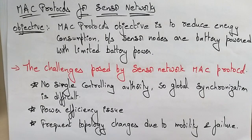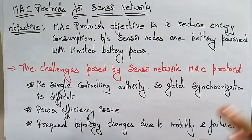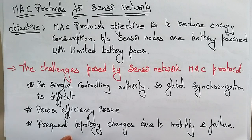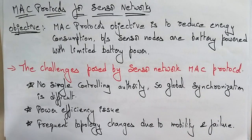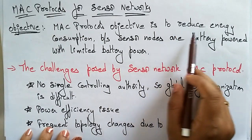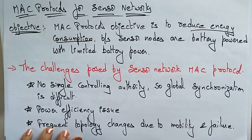Hi students, welcome back. Let's continue with our wireless sensor networks. The next topic is MAC protocols for sensor networks. You have MAC protocols for mobile computing, ad hoc networks, as well as sensor networks. The main objective of MAC protocols in sensor networks is to reduce energy consumption.